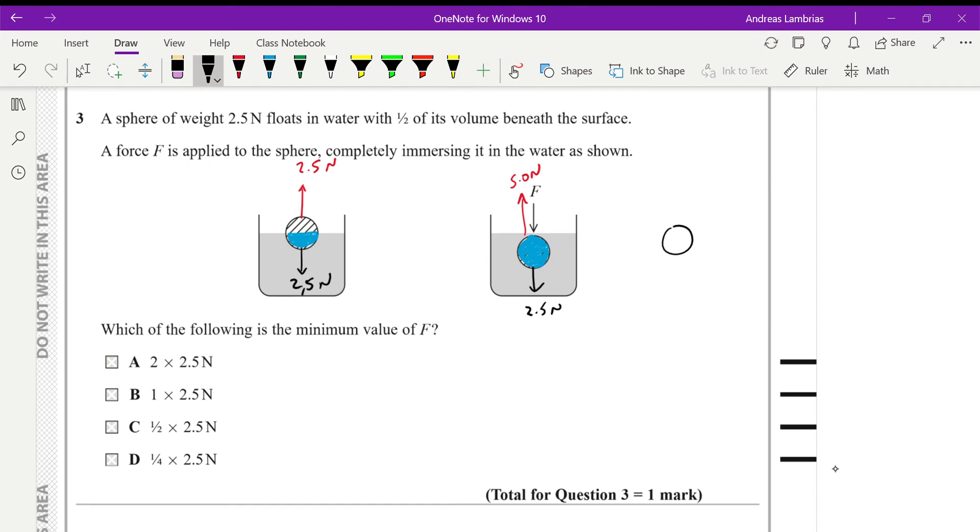And therefore, if I draw this object again, we have the weight, we have the force that we're pushing it down, and we have the upthrust. So it's still stationary. It doesn't move. Therefore, the forces have to be balanced. If the upthrust is 5 newtons and the weight is 2.5 newtons, therefore F also needs to be 2.5 to be able to balance the sphere under the water. Therefore, this will be F equals B.